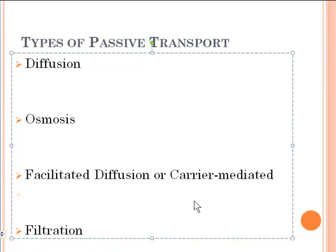Filtration is based on hydrostatic pressure — simply a pressure like in a water hose. Water flows through the hose, you poke a hole in it, and the water squirts out because there's more pressure inside than in the atmosphere. Substances move from high pressure to low pressure. This occurs famously in your capillaries and kidneys. Filtration is the movement of both water and solutes through pores from areas of high to low pressure.